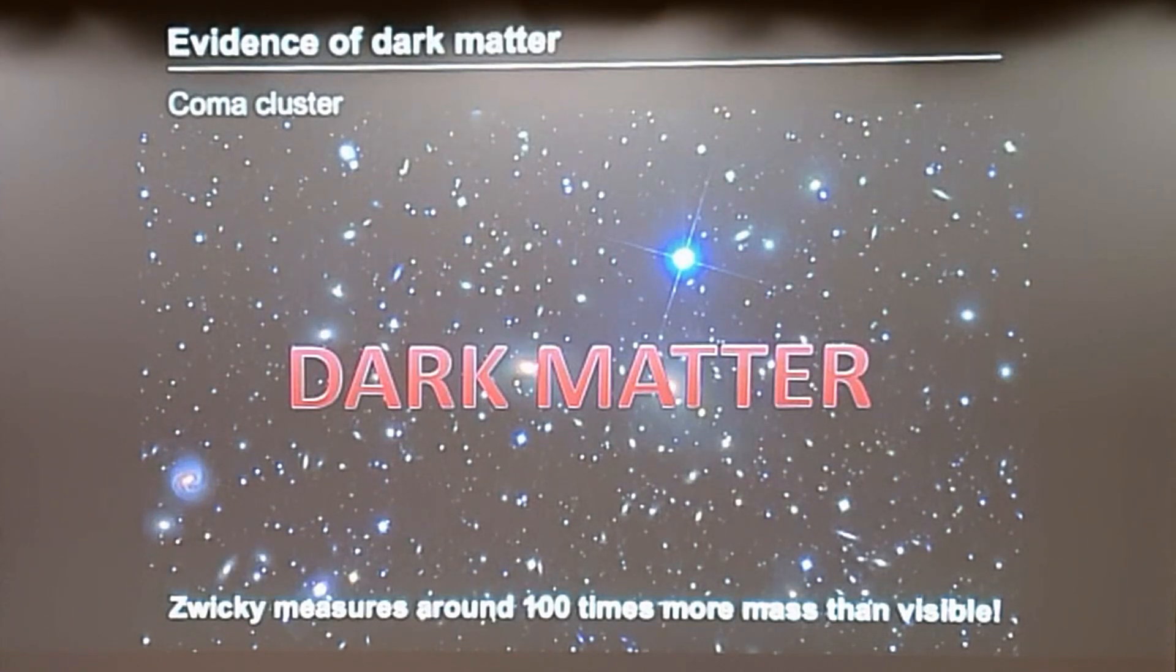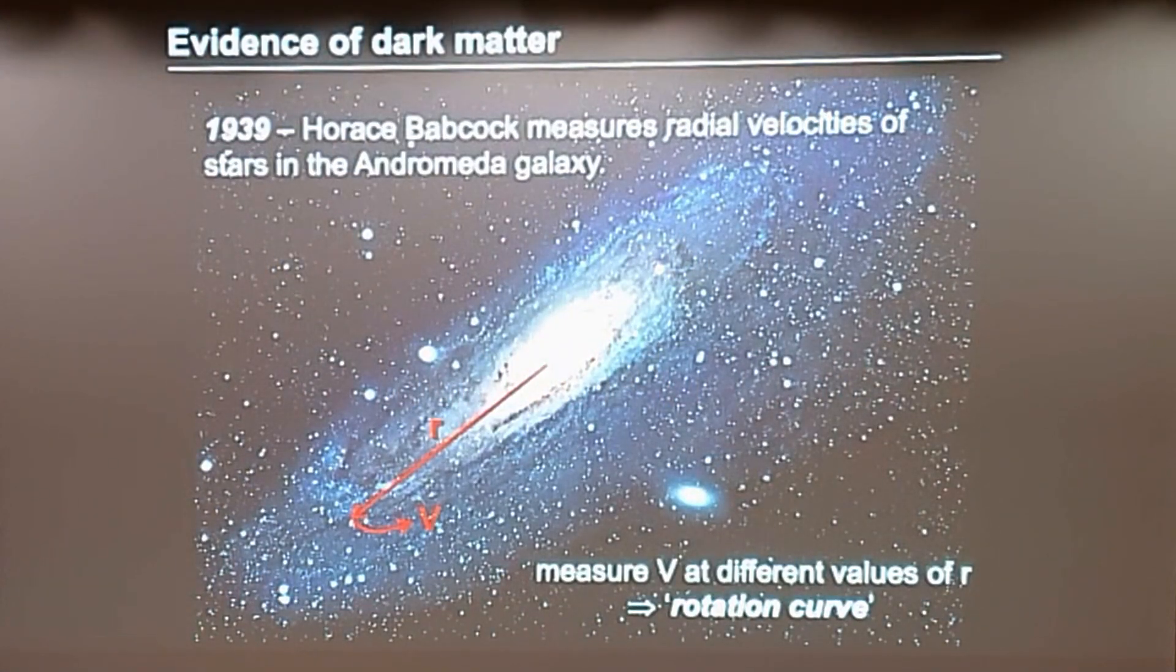No one really took that result too seriously until 1939, when a chap called Horace Babcock came along. As part of his PhD work, he did a very similar analysis. He looked at the motion of stars in the outskirts of the Andromeda galaxy. You look at the speed of the stars, a large distance from the center, and you find the same thing. The motion of the stars in these large radii, they're moving too quickly. The galaxy should tear itself apart if the only mass that's there is the stuff that we can see. So again, this gives rise to the fact that there is a missing mass in the universe.